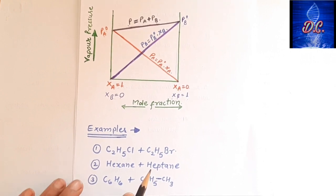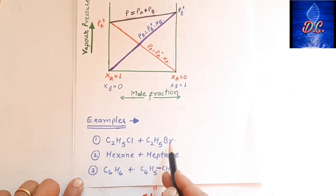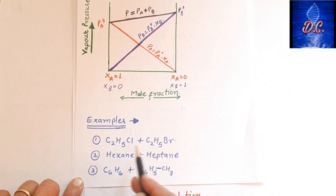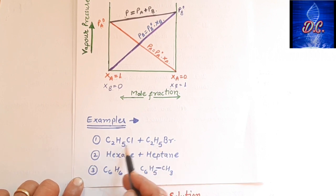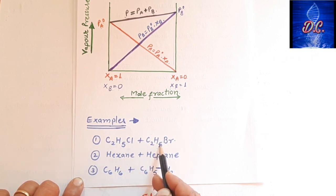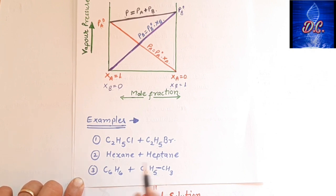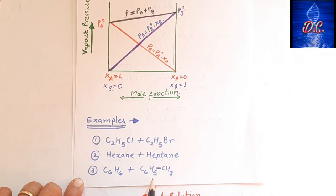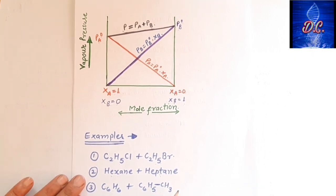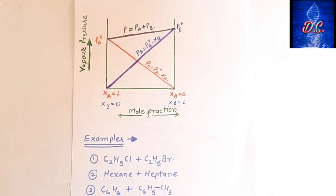Now some examples of Ideal Solution: if you mix chloroethane and bromoethane, you get an ideal solution because the structure, nature, and intermolecular forces are almost the same. Similarly, n-hexane and n-heptane give an ideal solution. Benzene and toluene when mixed also result in the formation of an ideal solution. Chlorobenzene and bromobenzene when mixed will also form an ideal solution. I hope the concept of ideal solution is now clear. In the next video, we will talk about non-ideal solution.